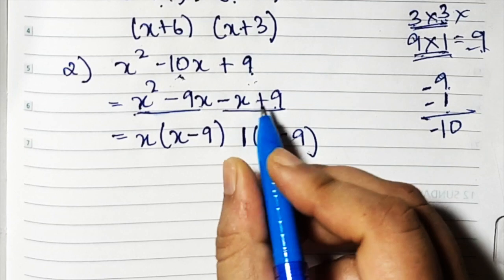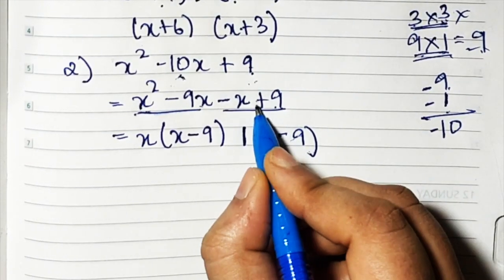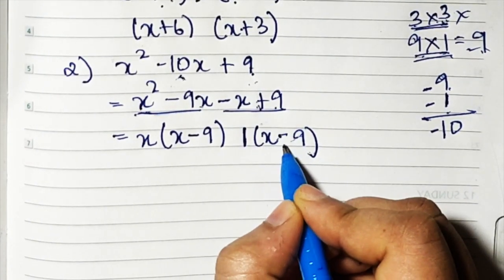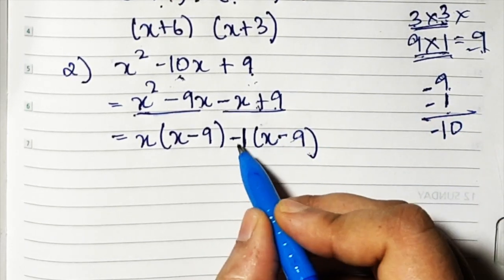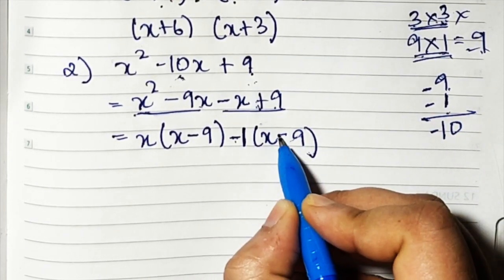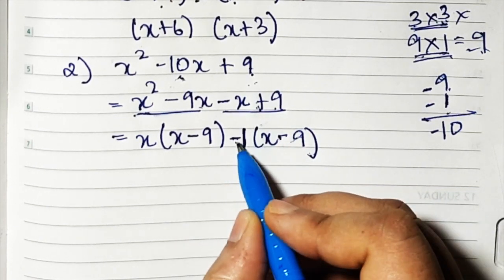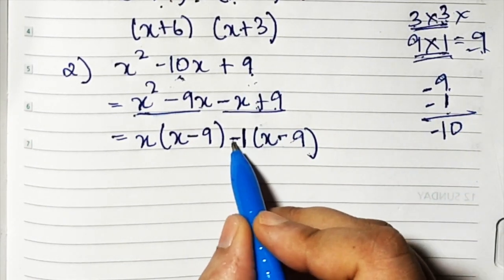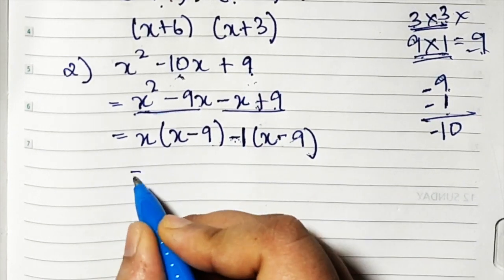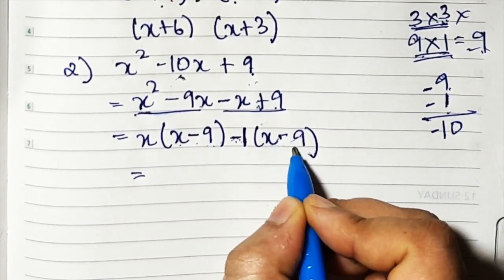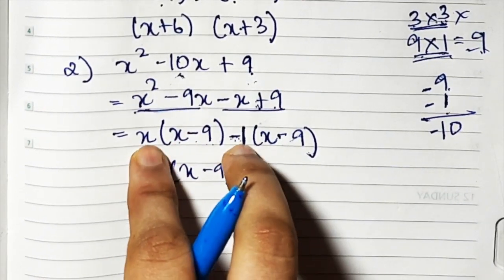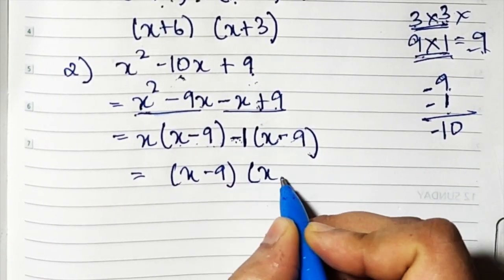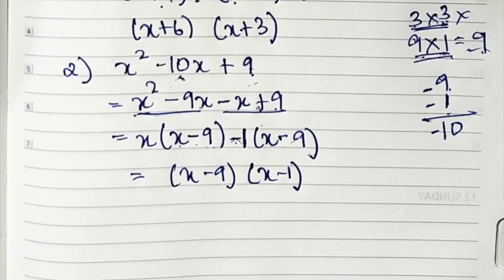But this is plus, right? Here it is positive sign. So we can't put a minus sign here. So what we'll do is take minus sign outside. When I take minus sign outside, minus times minus is plus, so when I open the bracket it automatically becomes plus. So I take minus 1 outside. Now what happens: x minus 9 forms one bracket, and x minus 1 forms the other bracket.